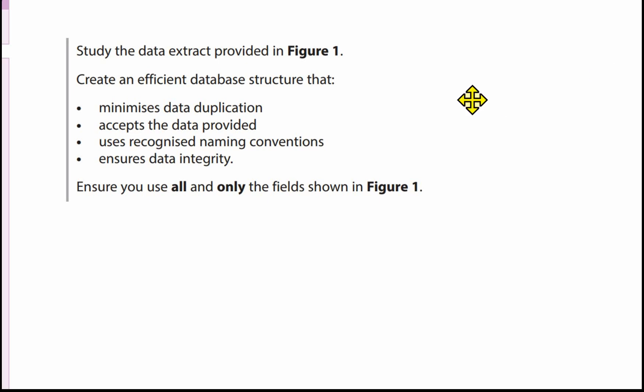Let's have a look at what we've got to do. We need to study the data provided in figure one — we've done that already, we looked at the data when we were designing the database. We need to create an efficient database structure that minimises data duplication, accepts the data provided, uses recognised naming conventions, and ensures data integrity. We need to ensure that we use all and only the fields shown in figure one.